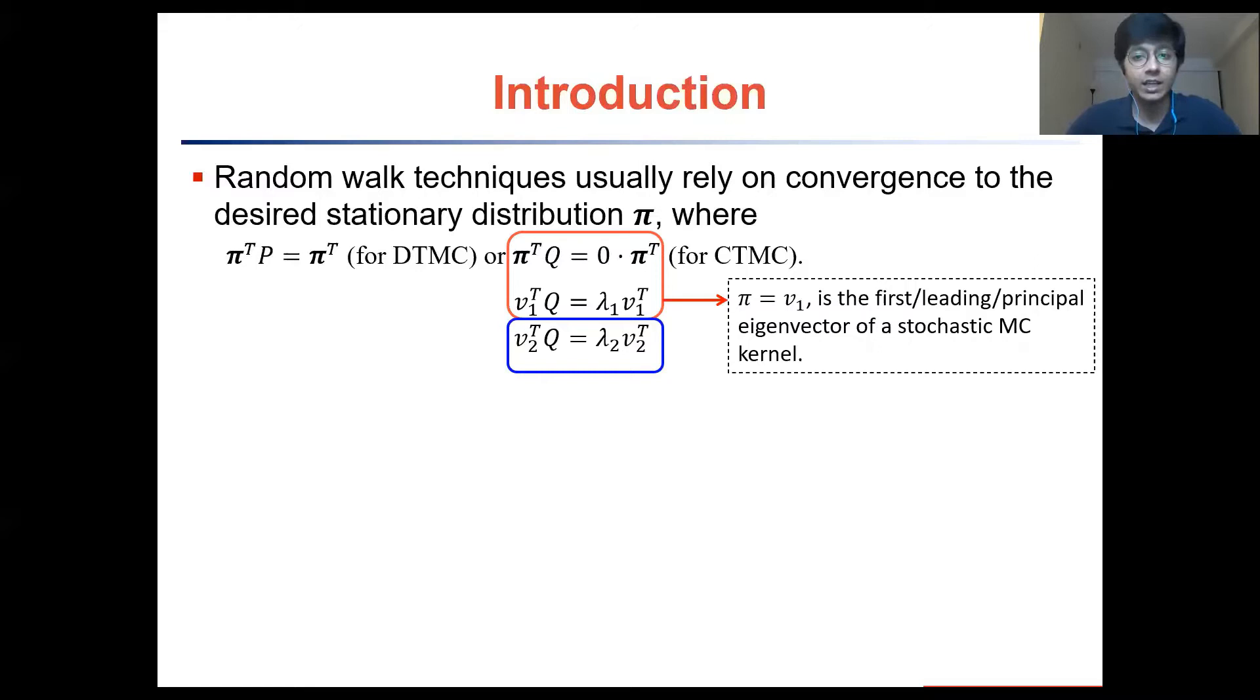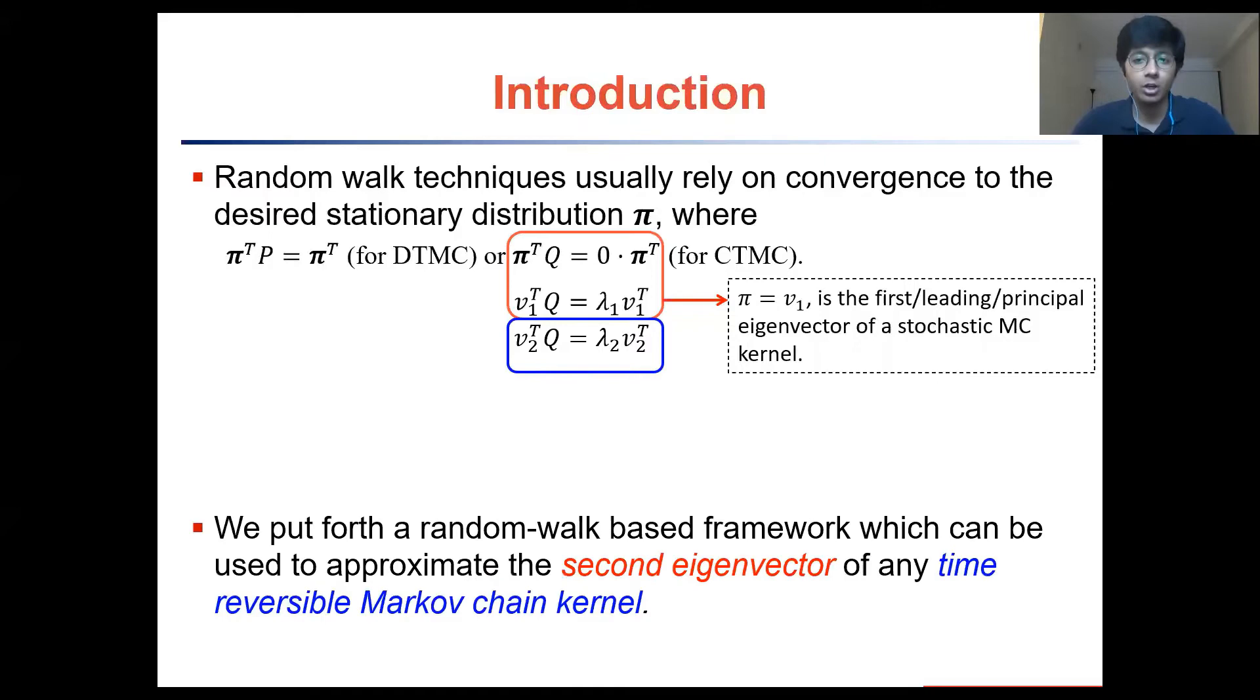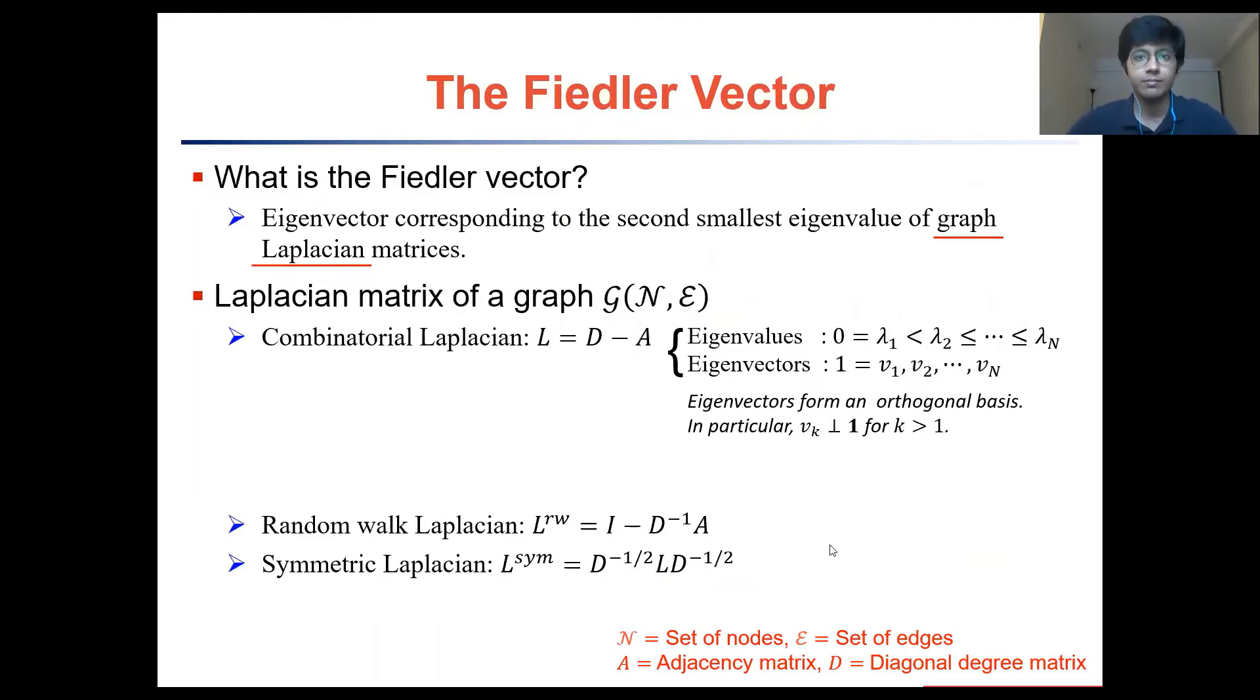In our work, we focus on the second eigenvector, v2, and we provide a random walk based framework for approximating the second eigenvector of any time reversible Markov chain.